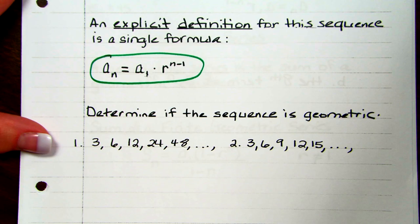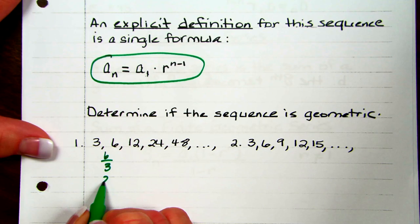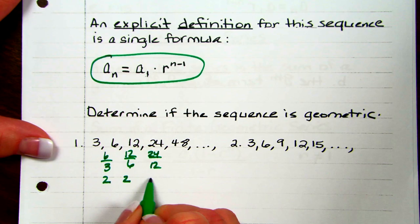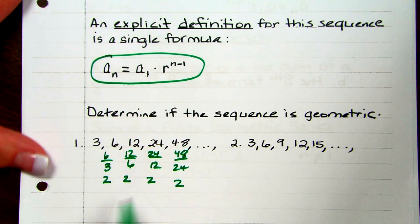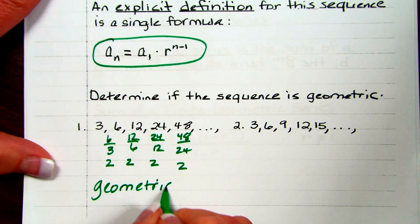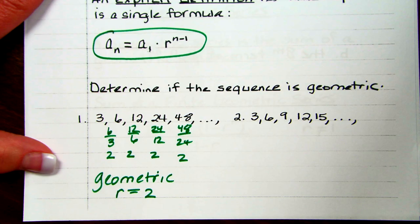The first group: we're going to determine if these sequences are geometric. If we look at this one, you take 6 divided by 3 and get 2. You take 12 divided by 6 and get 2. You take 24 divided by 12 and get 2. And 48 divided by 24, you get 2. So this is geometric, and the common ratio would be multiplying by 2.